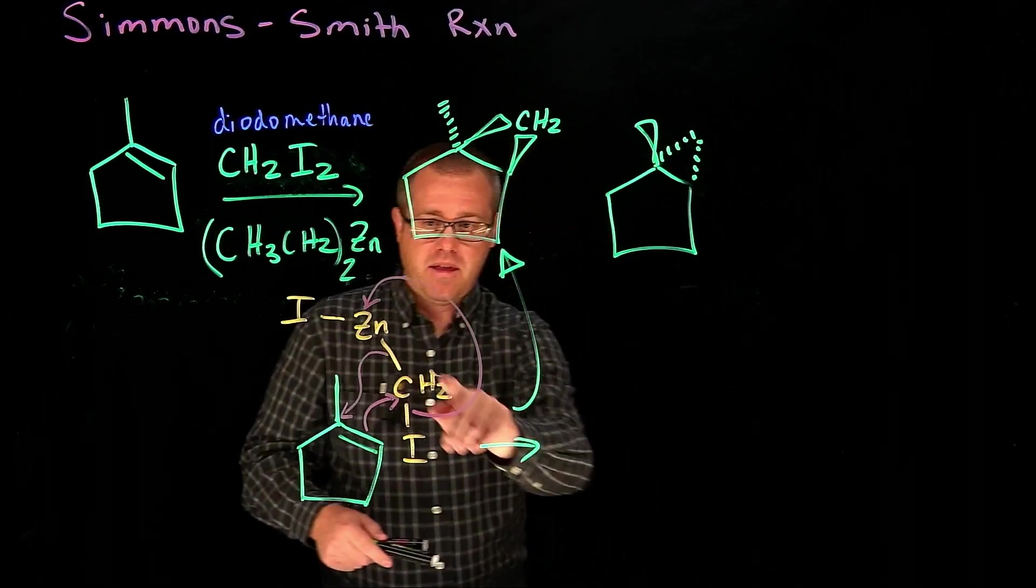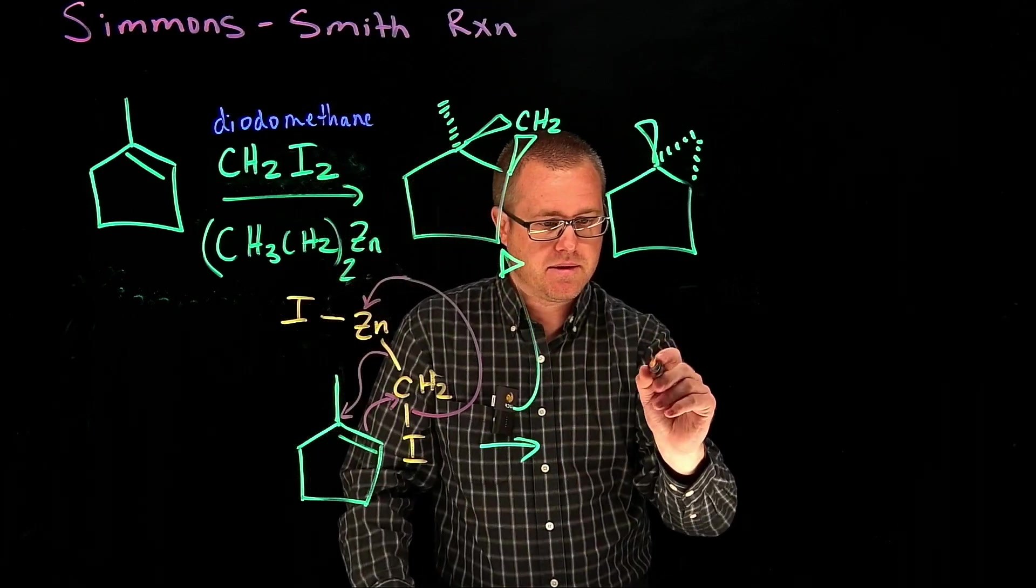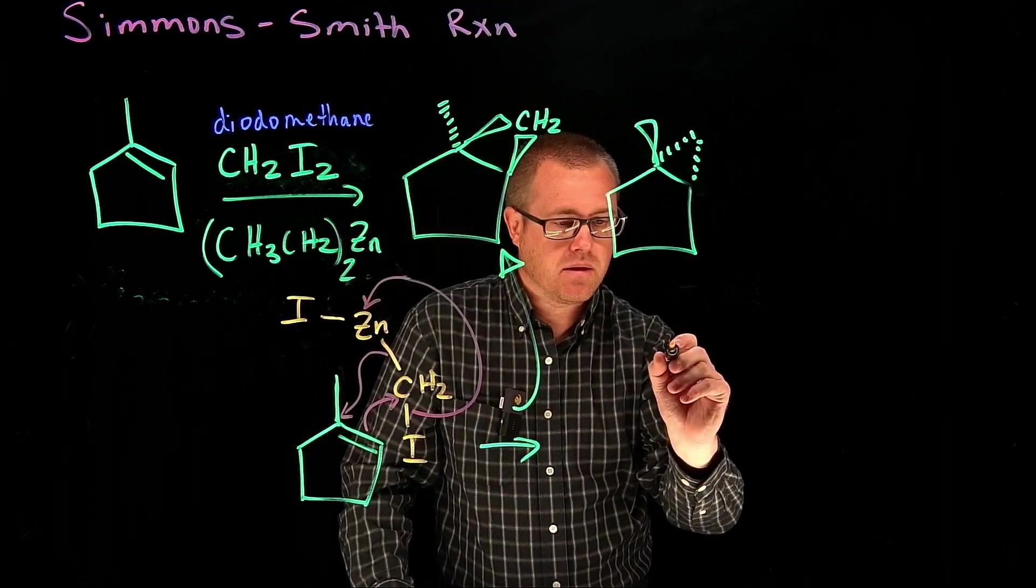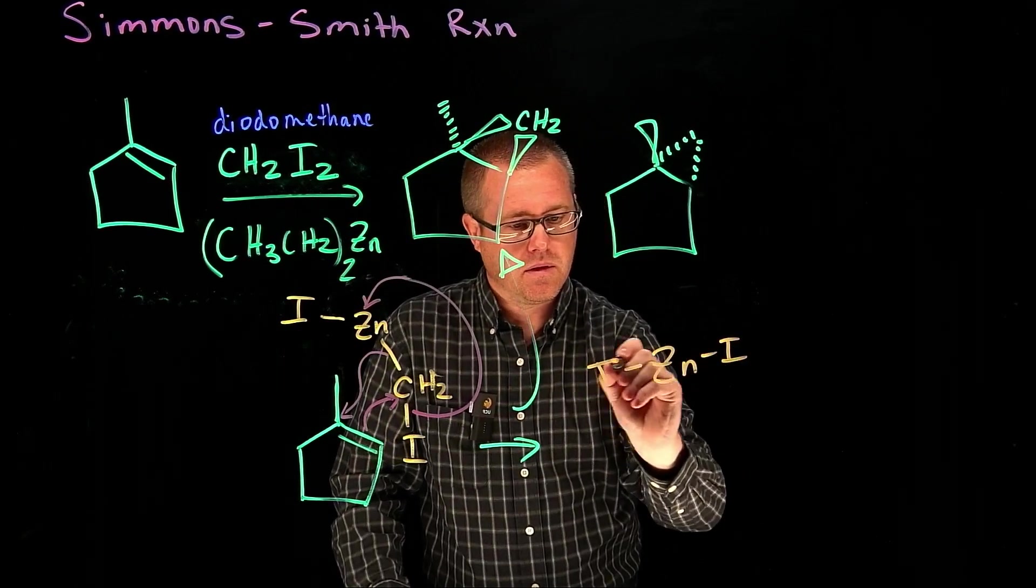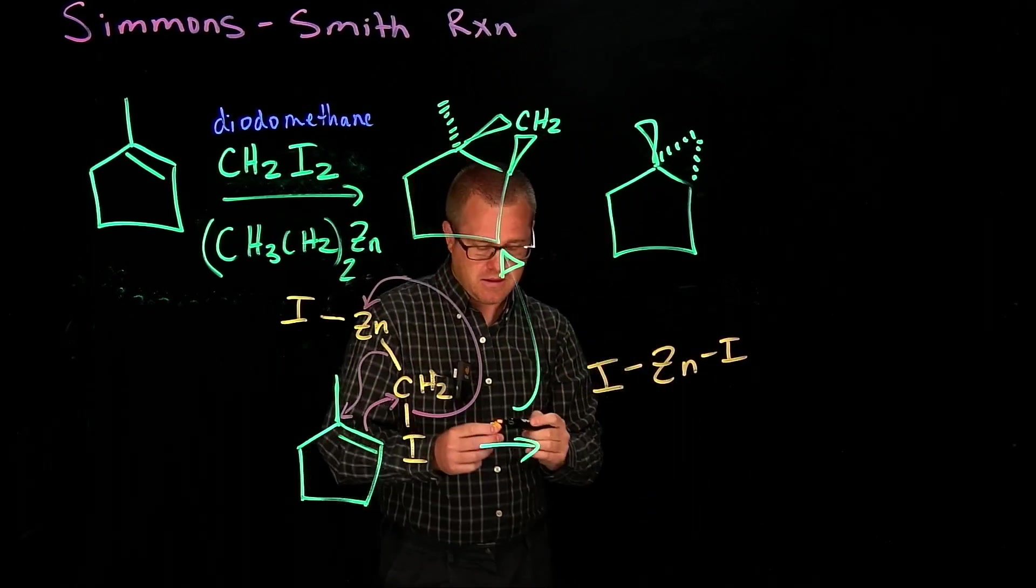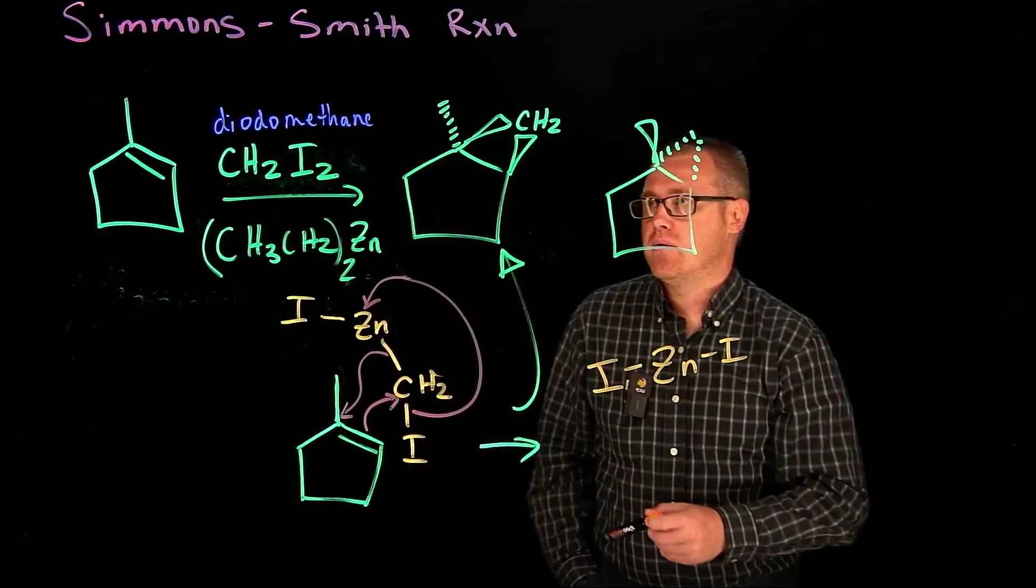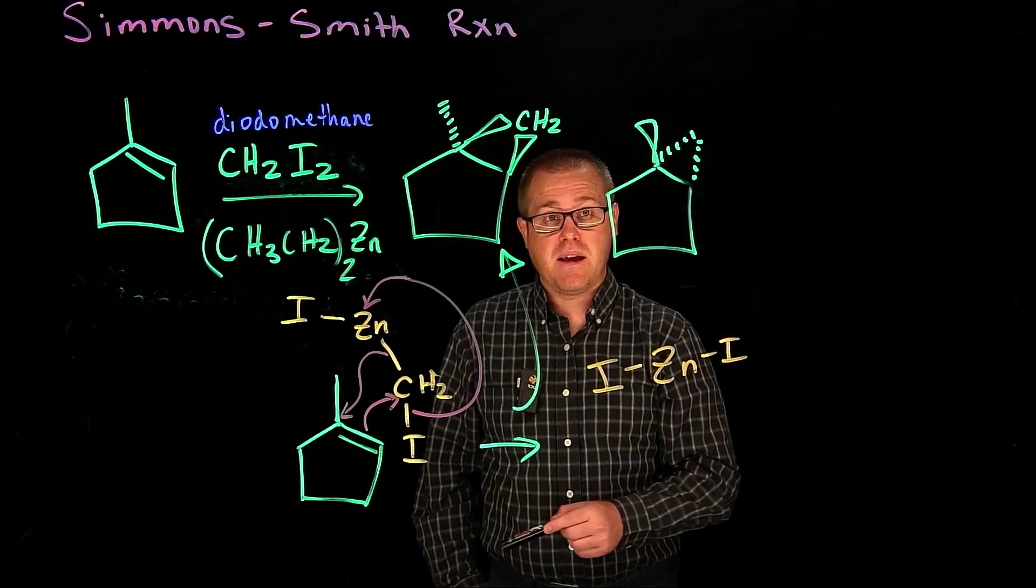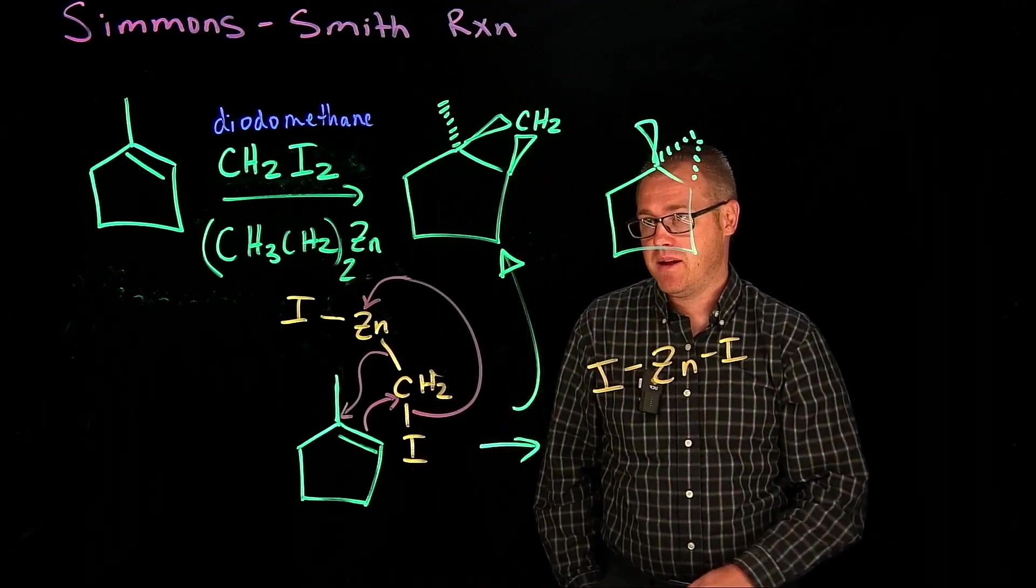This species in orange right here is going to turn into this. Like so. And that's the Simmons-Smith reaction. A much safer way of making your cyclopropane rings than using the diazomethane method.